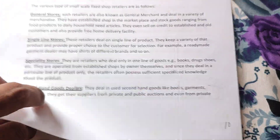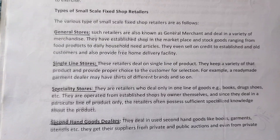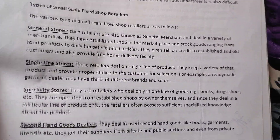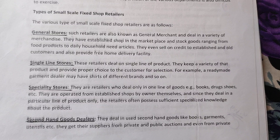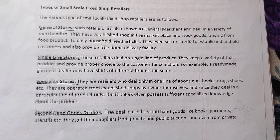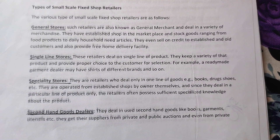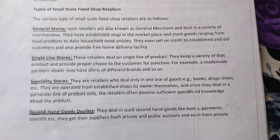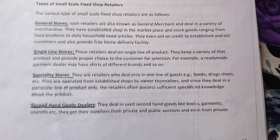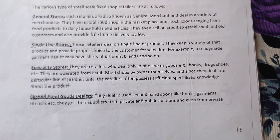The first topic is types of small scale fixed shop retailers. First, general stores — such retailers are also known as general merchants and deal in a variety of merchandise. They have established shops in the marketplace and stock goods ranging from food products to daily household articles. They even sell on credit to established and old customers and also provide free home delivery facility.